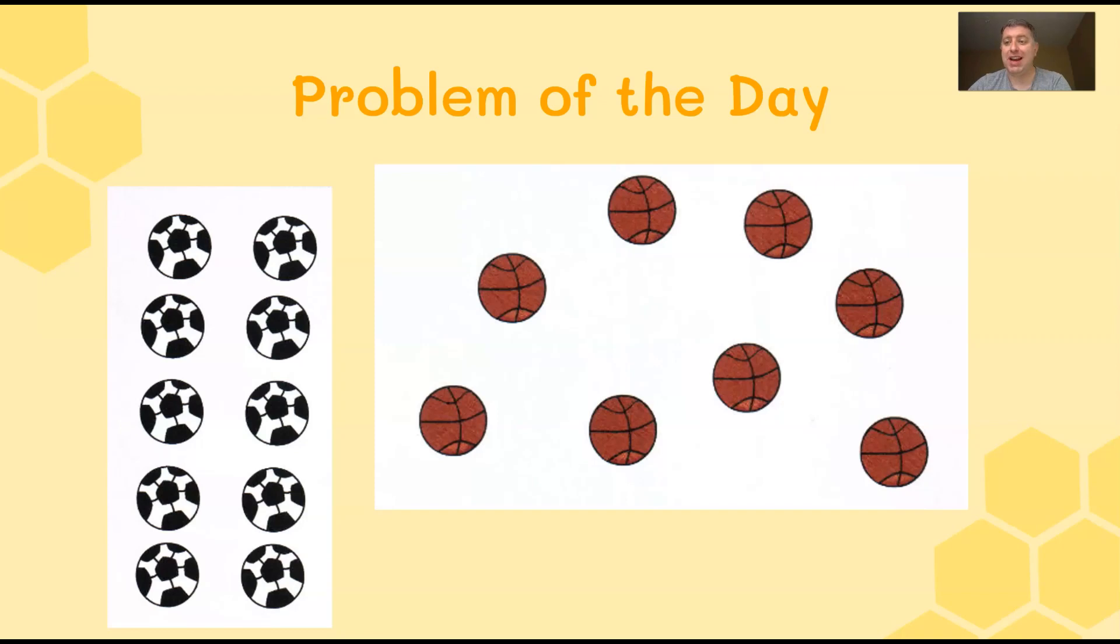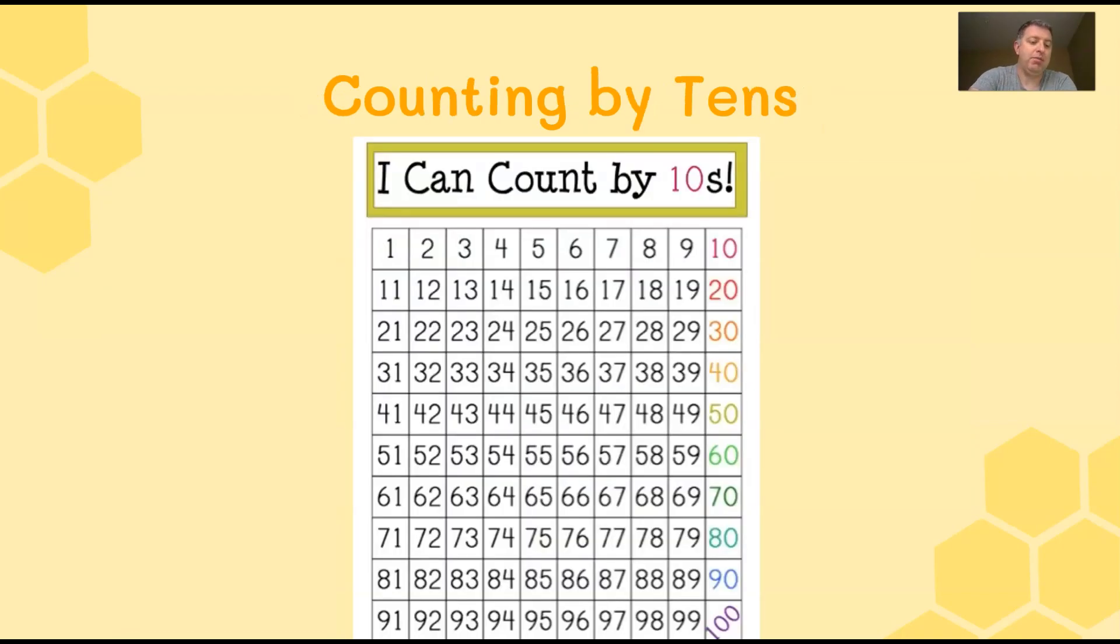We're going to get to our Nearpod friends in just a minute, but before we do, let's go and practice counting by tens. Friends, when we count by tens or skip count by 10, we're going to skip over the one, two, three, four, five, six, seven, eight, nine, and just count the tens. And those are the numbers at the end. So here we go. 10, 20, 30, 40, 50, 60, 70, 80, 90, 100.